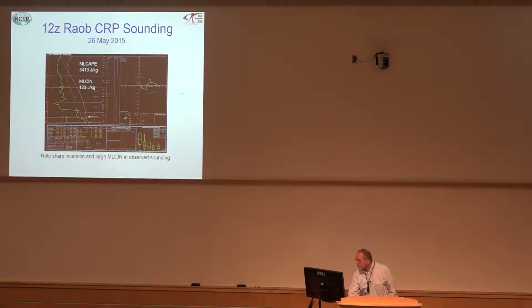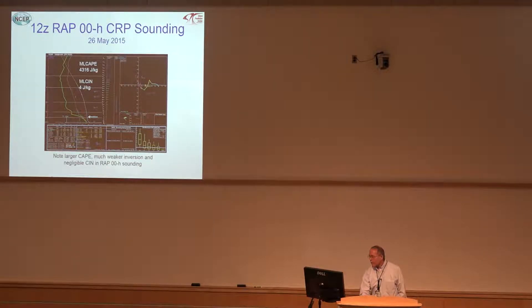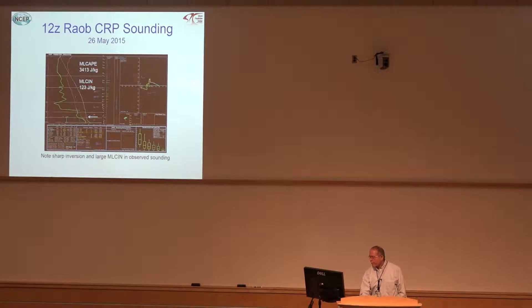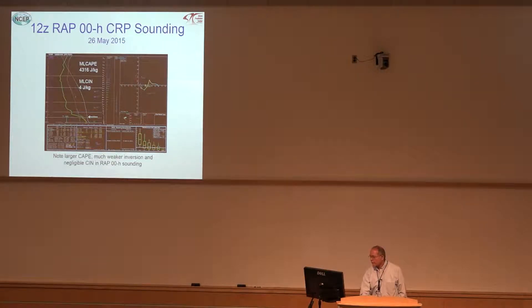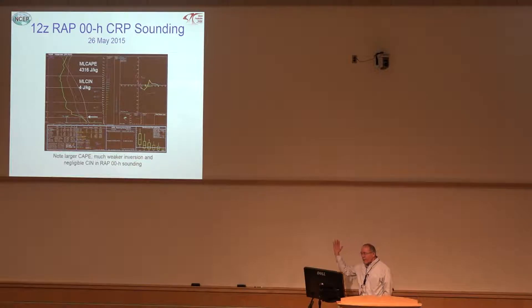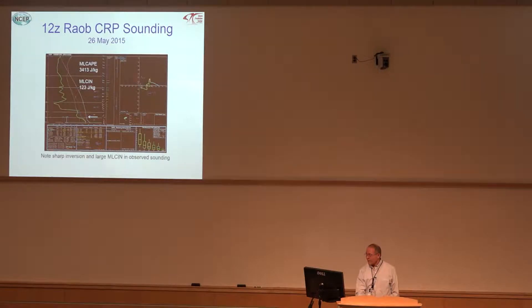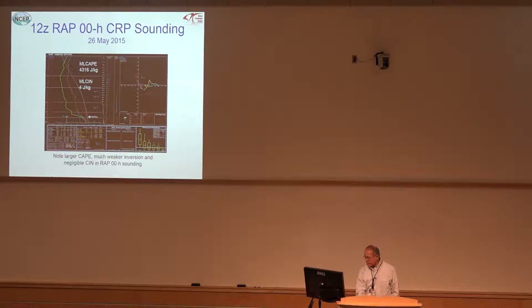So we know what the observed sounding looks like. Let's take a look at the RAP sounding. What happened to that inversion in the model? It's gone — the model says, what inversion? It's got even more CAPE: 4300 joules, and virtually no CIN. So what's going to happen in the model when it analyzes something like that? Let's take a look.